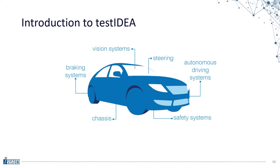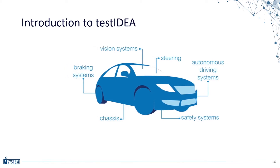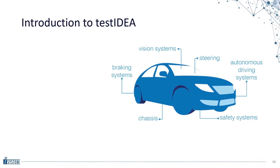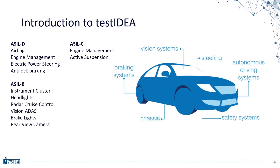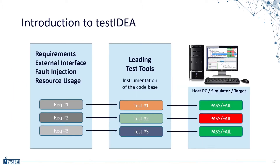Let's take a look at typical ECUs found inside an automotive vehicle. Each system is made up of different controllers or ECUs which fall under different safety integrity levels. ASIL-D are the most safety critical controllers and require the most testing. ASIL-A are the least safety critical and require the least testing.